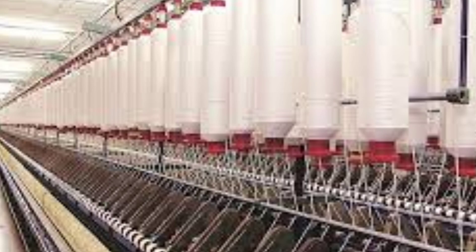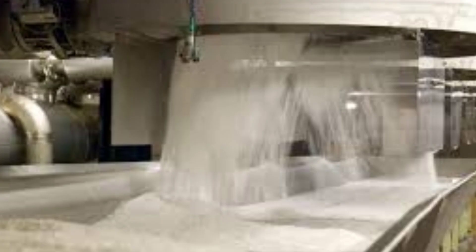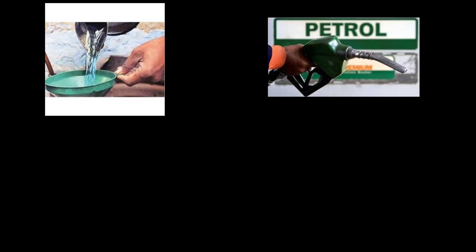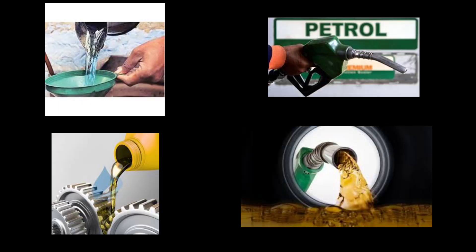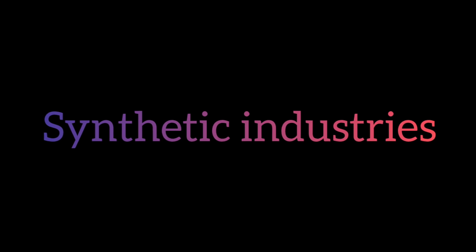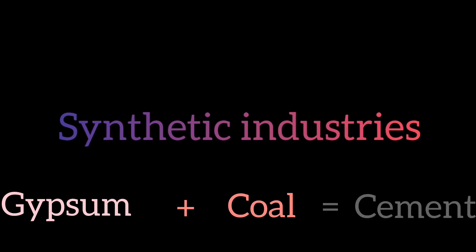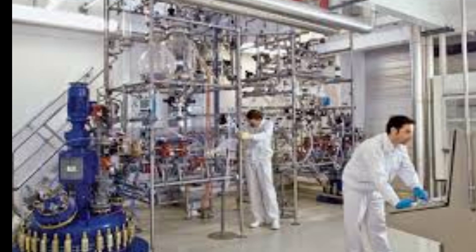In manufacturing, if you use raw materials like cotton to make cloth, sugar, or drugs, that is the manufacturing industry. Within manufacturing, there is analytical industry, where you take a raw material and analyze or separate it — for example, separating crude oil into petrol and diesel. There is also synthetic industry, where you combine materials — for example, mixing gypsum and coal to make cement, or combining drugs A and B to create a new product.